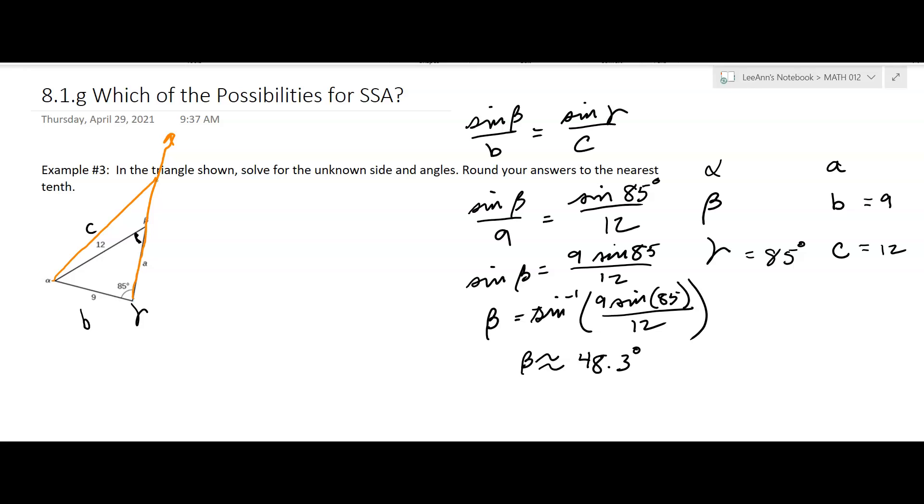Okay, so how do you find this angle right here? Well, that angle is going to be, let's see, and remember this has to be 12 here. Okay, that angle is going to be the supplement of 48.3. So 180 minus 48.3, which ends up being 131.7 degrees.